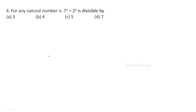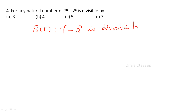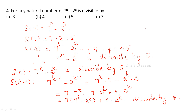Next, for any natural number n, 7ⁿ - 2ⁿ is divisible by what? Always remember, whenever you are using mathematical induction, the given statement you take as S(n). That is, 7ⁿ - 2ⁿ is divisible by some number. S(1) is 7 - 2 = 5. S(2) is 45. Therefore, it is divisible by 5.